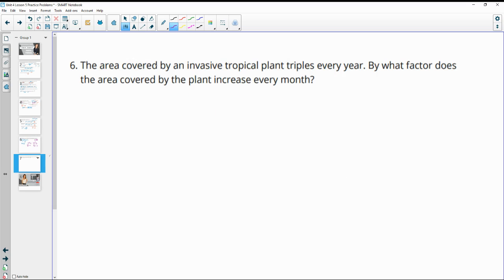Number 6, the area covered by an invasive tropical plant triples every year. By what factor does the area covered by the plant increase every month? So this is yearly. So 1 year equals 12 months.